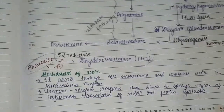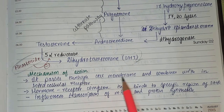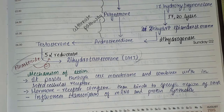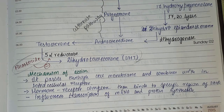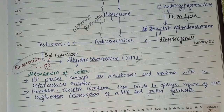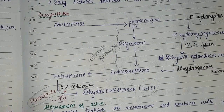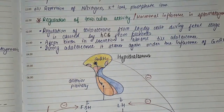Moving on to the mechanism of action: testosterone is a steroid hormone, so like all steroid hormones it can easily pass through the cell membrane and combine with intracellular receptors. Receptors are of two types — extracellular, present on the cell membrane, and intracellular. A hormone-receptor complex is formed, which then binds to a specific region of DNA, influences transcription of mRNA, and finally protein is synthesized. That protein is used in various metabolic activities like physical development of body structures.